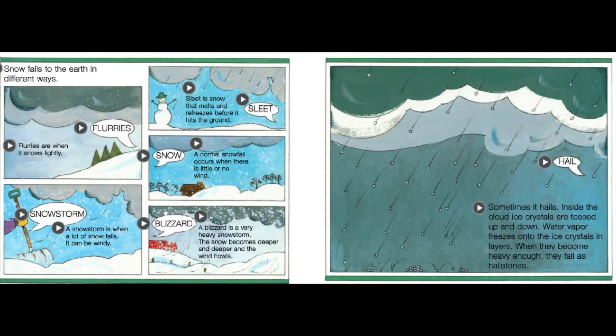Snow falls to the earth in different ways. Flurries are when it snows lightly. A snowstorm is when a lot of snow falls and it can be windy. Sleet is snow that melts and refreezes before it hits the ground. A normal snowfall occurs when there is little or no wind. A blizzard is a very heavy snowstorm — the snow becomes deeper and deeper and the wind howls.